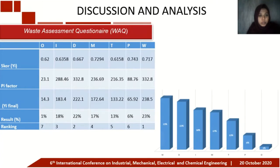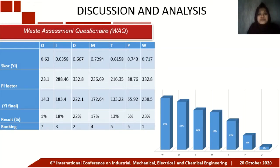The waste assessment questionnaire identified that the biggest waste is waiting, with a percentage of 23%, followed by defects at 22%. Waiting and defects need to be addressed because they have the largest contribution, so improvement must be made immediately. Other types of waste have lower percentages, so elimination of waiting and defects should be the priority.